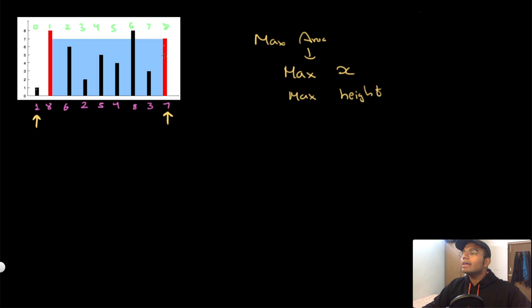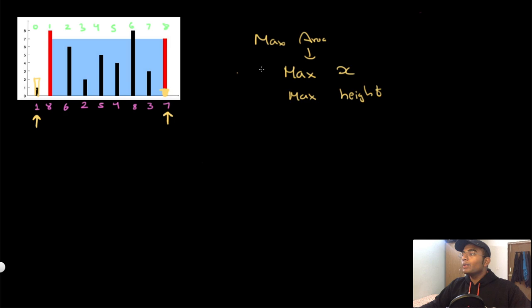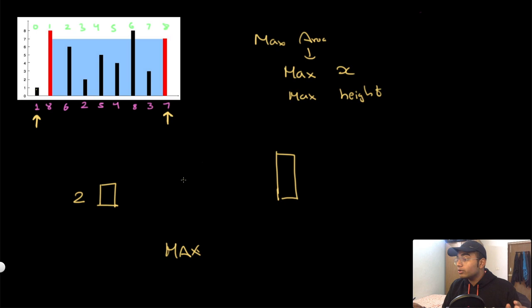The point I'm trying to prove is: if the last value is greater than or equal to the current height we're looking at, then the current height is not being constrained. For example, if this bar has height 2 and the far bar also has height greater than or equal to 2, we've found the maximum area this height can give us — we've maximized x-distance and there's no height constraint.